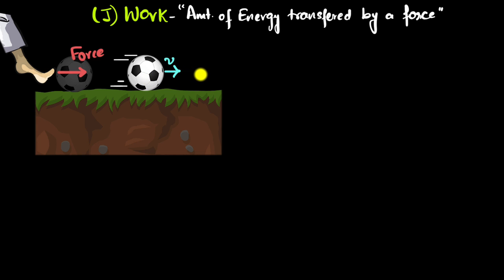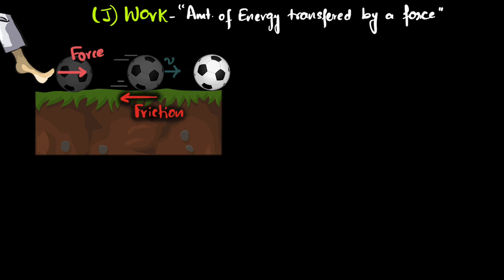As the ball moves forward it's going to stop because of frictional forces. When the ball is moving forward, friction is acting on it and removing all that kinetic energy. So work is being done by the frictional force — the amount of energy transferred out of the ball. That energy goes into heating up the ground. The kicking force transferred kinetic energy into the ball, while the frictional force transferred kinetic energy out of the ball.